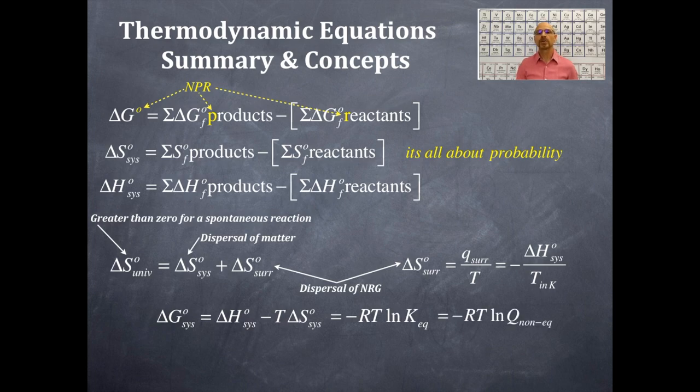This is also equal to delta G naught of the system, is also equal to negative RT ln Q. And the only difference between the negative RT ln K and negative RT ln Q is that the Q is at non-equilibrium conditions. It still products over reactants with the stoichiometric coefficients as exponents, if we go way back to that unit on equilibrium.